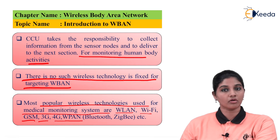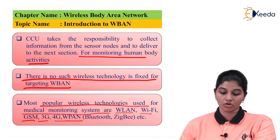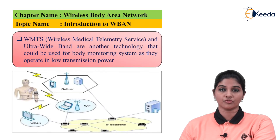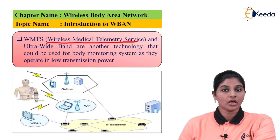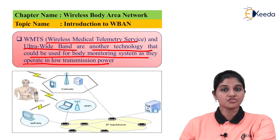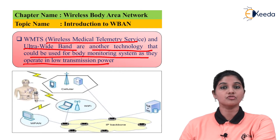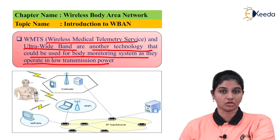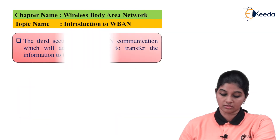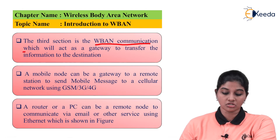We can use Bluetooth for short-range transmission, ZigBee, or GSM when the distance is much larger. We can also use wireless LAN or Wi-Fi. Wireless Medical Telemetry Services (WMTS) and ultra wideband are other technologies that can be used for body monitoring, as they operate on low-power transmission systems — satisfying the first requirement of wireless body area network which is low power consumption.